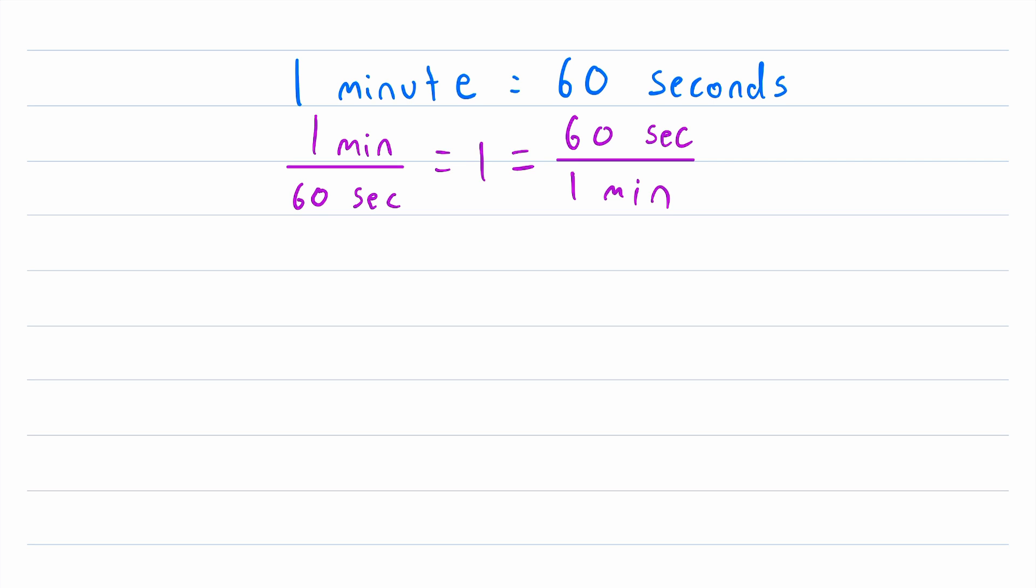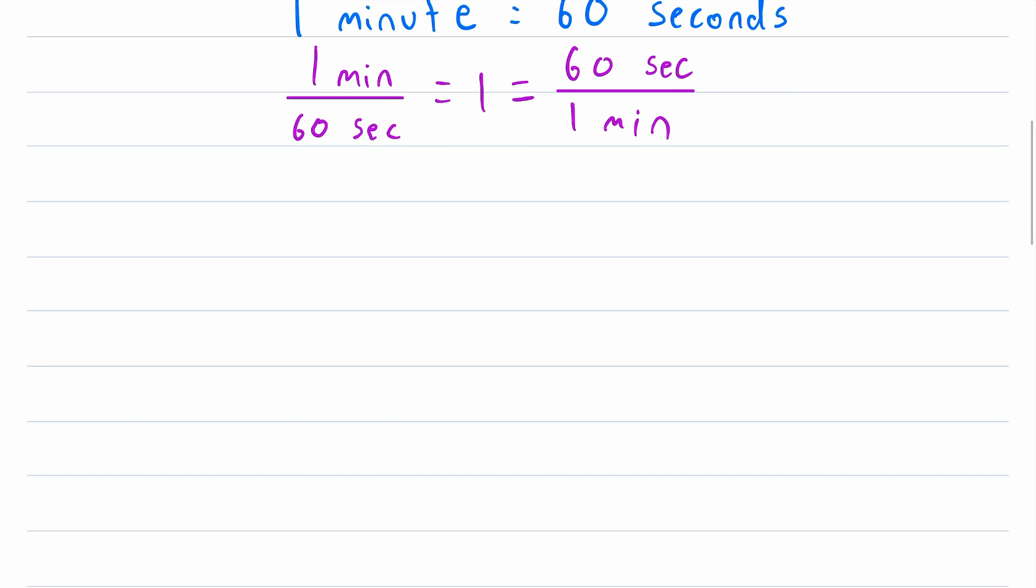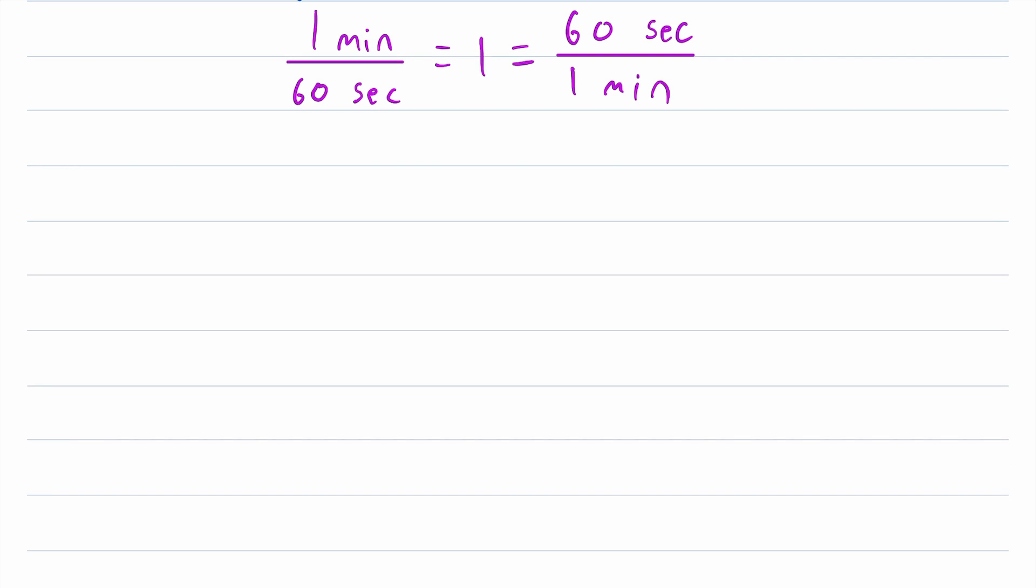Again, these are both called conversion factors, because we can multiply by them in order to convert from one unit to another. Notice that they are both equal to one. So if we multiply something by them, in this case, we're talking about time. So if we multiply by these conversion factors, we won't change the amount of time, we'll just change the unit. So let's go through a couple of examples to see this in action.